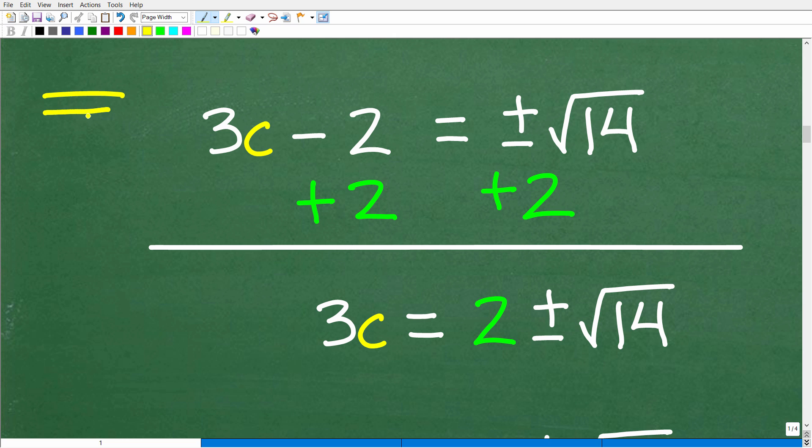We do need to put in that positive or negative because there's basically two answers. Now all we need to do is some basic algebra to solve for C. All we do is add two to both sides of the equation. Notice how I'm doing this problem step by step, telling the story so somebody reading this can understand what's going on. You never just want to jump from here to here.